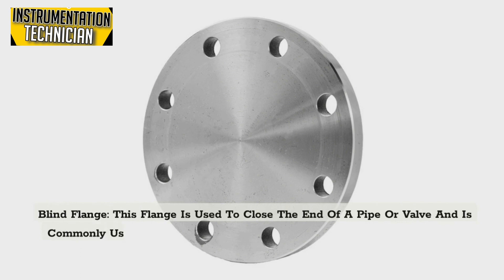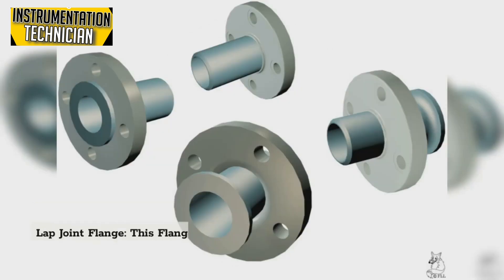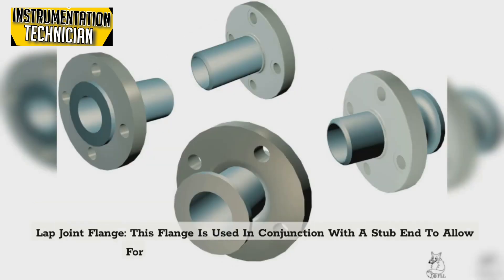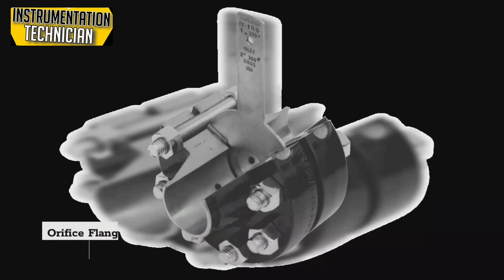Blind flange: This flange is used to close the end of a pipe or valve and is commonly used in applications where the pipe or valve may need to be accessed in the future. Lap joint flange: This flange is used in conjunction with a stub end to allow for quick disassembly of the piping system.